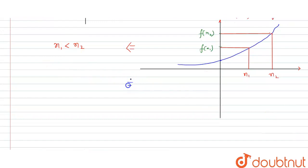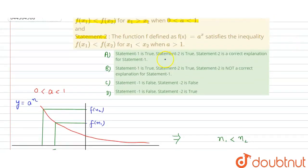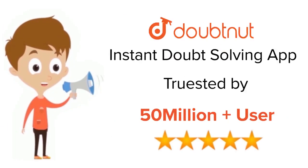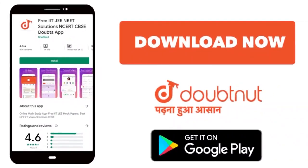So Statement 1 is false and Statement 2 is true. Therefore, option D is the correct answer. For class 6 to 12th, IIT JEE, and NEET level, trusted by more than 5 crore students — download the DoubtNet app today.